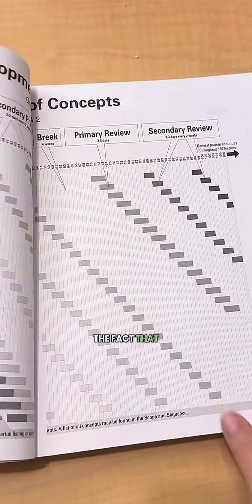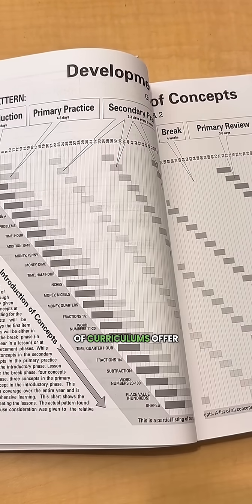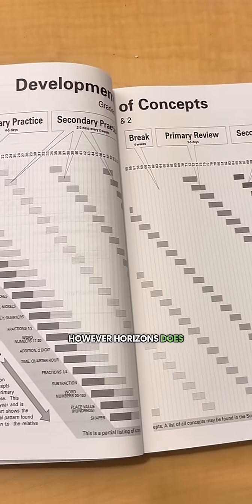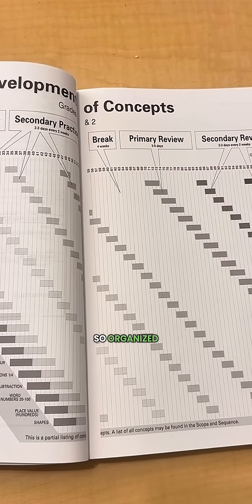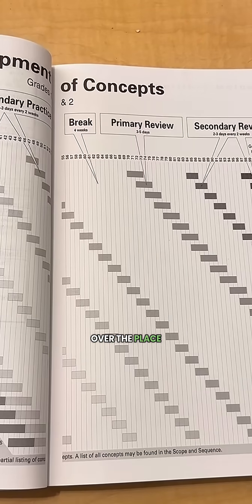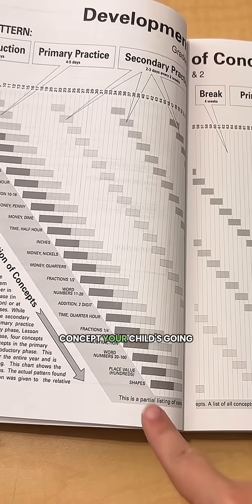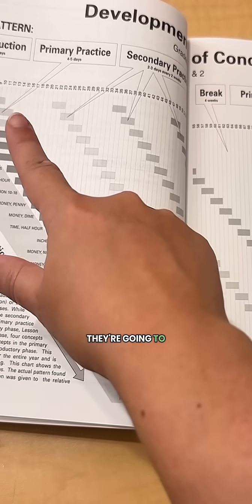First up is the fact that Horizons is a spiral-based curriculum, which a lot of curriculums offer. However, Horizons does it in a way that is so organized. It doesn't feel messy or all over the place. You can see that for every concept your child is going to be learning throughout the year, they're going to have